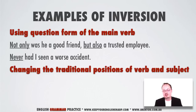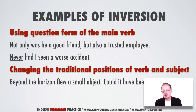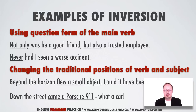Now we're changing the traditional positions of verb and subject. Have a look: 'Beyond the horizon flew a small object. Could it have been a UFO?' Normally of course we would say 'a small object flew.' Here's another one: 'Down the street came a Porsche 911.' We would normally say 'the Porsche 911 came or drove down the street.'